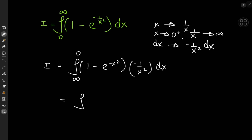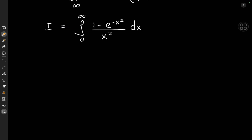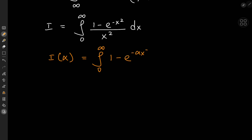So finally, we have the target integral I equal to the integral from 0 to infinity of (1 − e^(−x²)) / x² dx. The transformed integral looks perfect for applying Feynman's trick of differentiating under the integral sign. So let's define an integral function I(α) as the integral from 0 to infinity of (1 − e^(−αx²)) / x² dx, where the target integral I equals I(α) evaluated at α = 1.